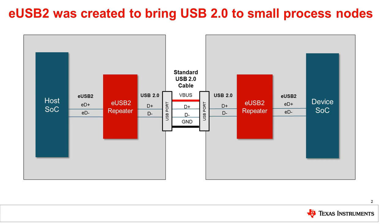eUSB2 is capable of supporting USB high-speed, full-speed, and low-speed operation, and requires no change to the existing USB 2.0 software programming model. eUSB2 also uses the same two data line configuration, shown as eD-plus and eD-minus, as USB 2.0, shown as D-plus and D-minus.